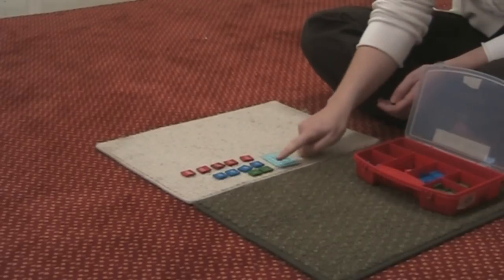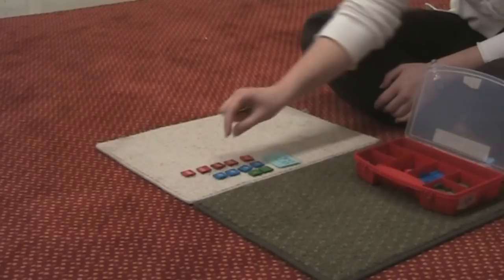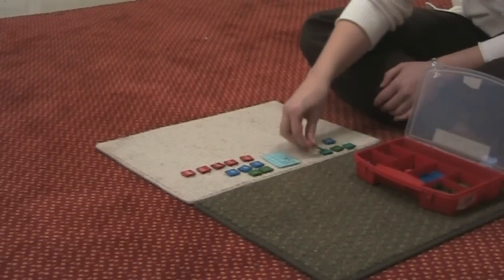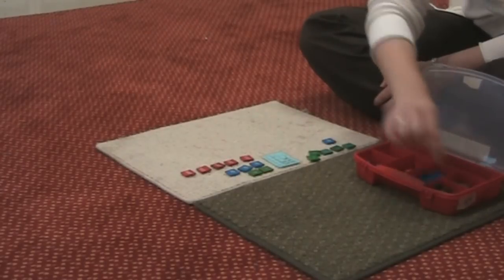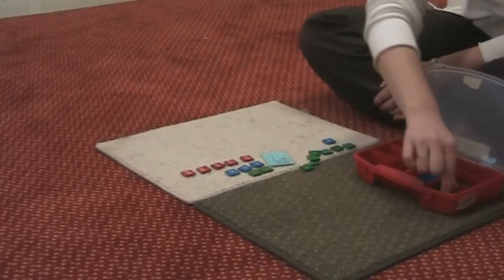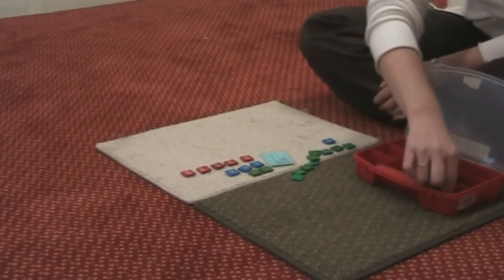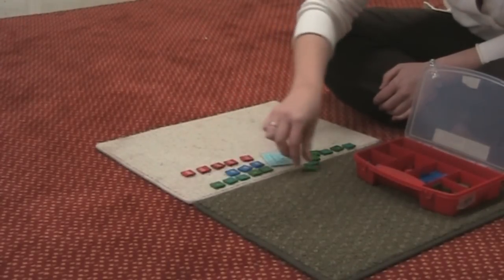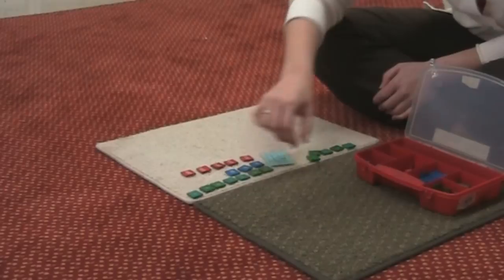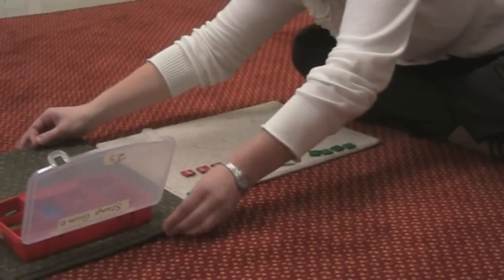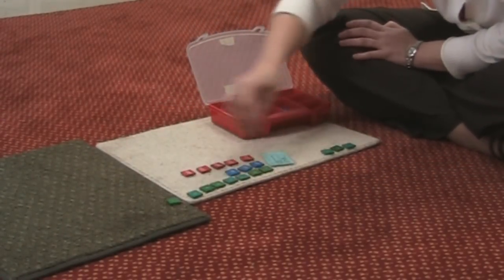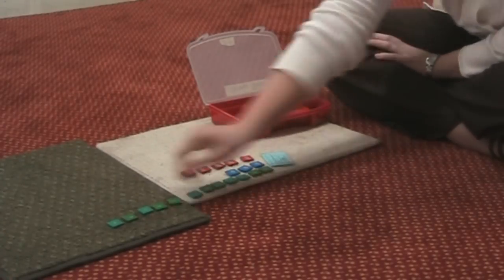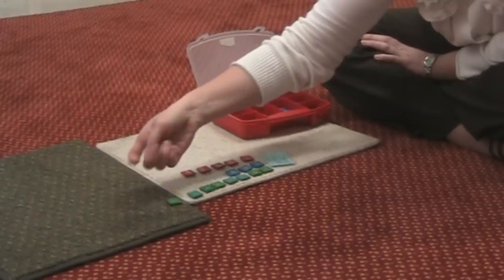Now we need to take away 5 units. But we can see we don't have 5. So we're going to take 1 ten block and turn it into 10 singles. 1, 2, 3, 4, 5, 6, 7, 8, 9, 10. Okay. Now we can add these with these guys. These are 2 different stamp games. Organization is key. Now we can take 5 units away. 1, 2, 3, 4, 5.